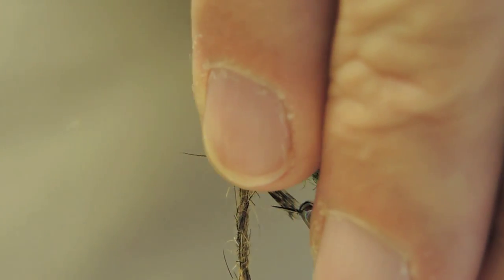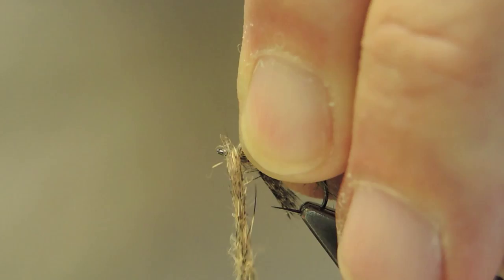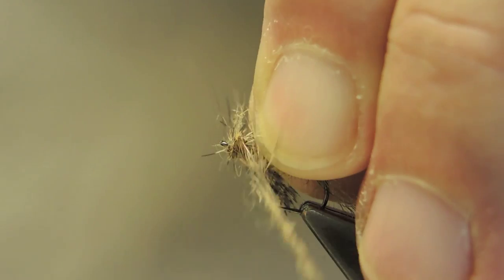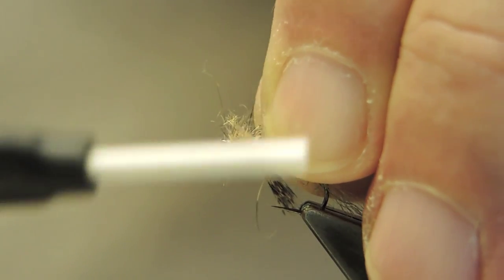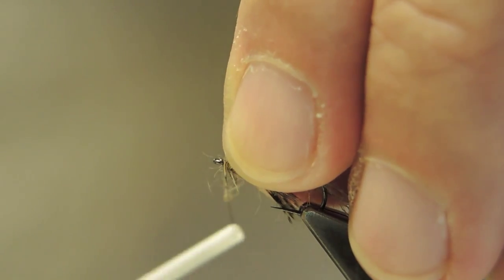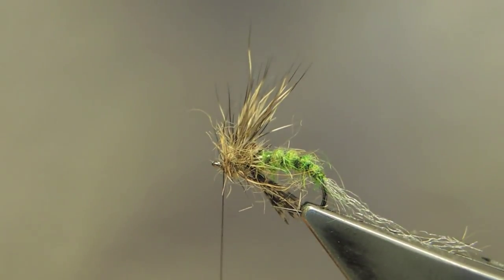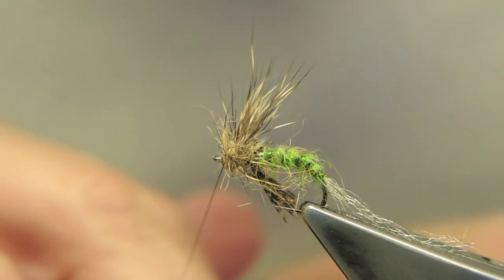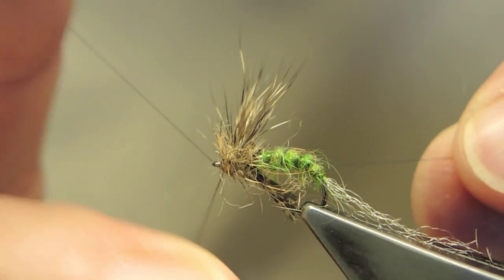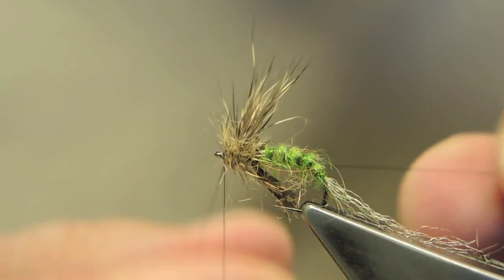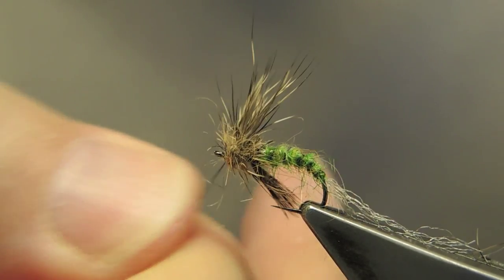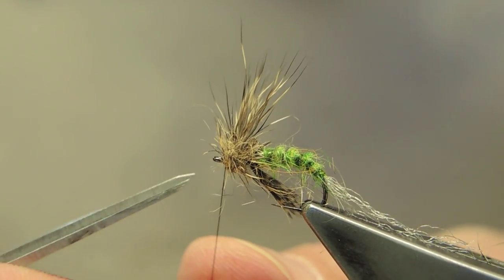Then lift the wing upright and wrap the head, quite spiky. And finish off with a three-turn whip finish and trim the thread.